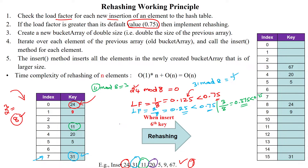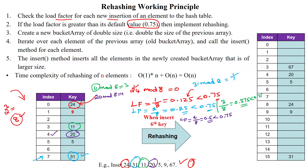Next I add the element 20. 20 mod 8 gives 4, so 20 is entered into the 4th memory location of the hash table. After inserting four elements out of eight memory locations, the load factor is 0.5. Comparing with the threshold 0.75, it is still smaller, so no need to apply rehashing.